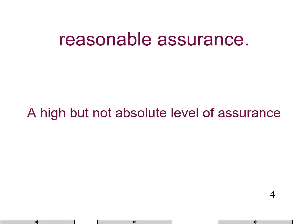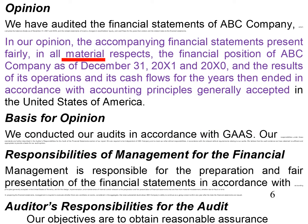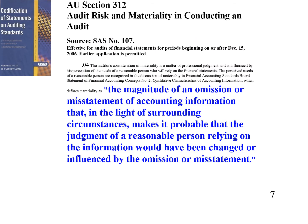Reasonable assurance is a high but not absolute level of assurance. In our opinion, the accompanying financial statements present fairly in all material respects. Nobody's financial statements are perfect — we don't have to say they are perfect, but are they fairly presented in all material respects? Auditing standards define materiality as the magnitude of an omission or misstatement of accounting information that, in light of surrounding circumstances, makes it probable the judgment of a reasonable person relying on that information would have been changed or influenced by the omission or misstatement.